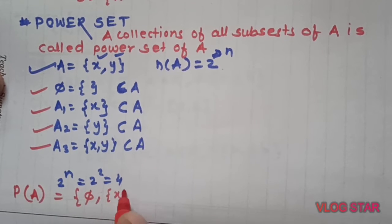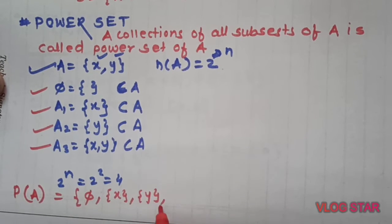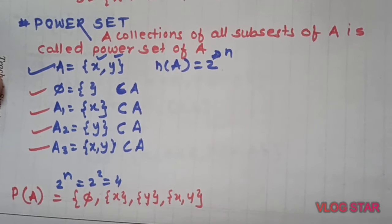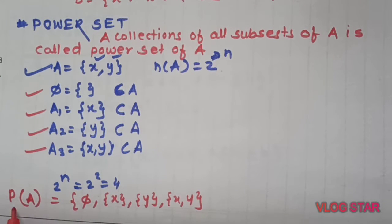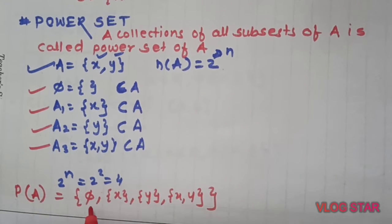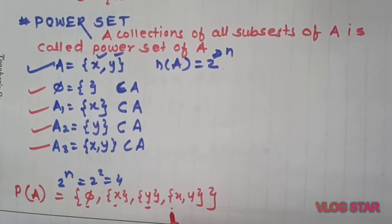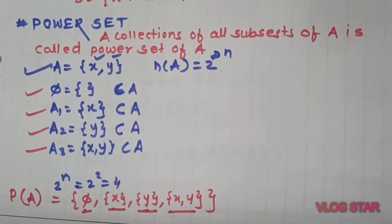First member is phi, the empty set. Second member is only x. Third member is only y. Fourth member is x, y. The power set is a set of subsets, so every member of the power set, each element itself is a set.